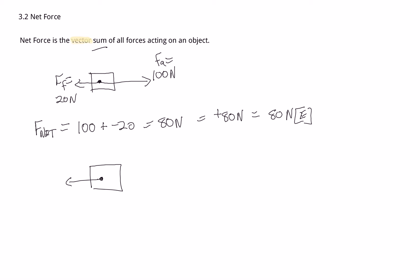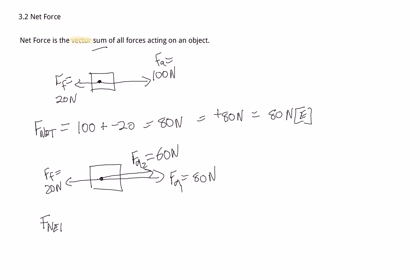Let's add to this question. Suppose we've got 20 newtons of friction again, one person applying 80 newtons forward, and another person applying 60 newtons forward — we'll call them applied one and applied two. Our net force is 60 plus 80 plus negative 20: that gives us 140 minus 20, which is 120 newtons to the right. Pretty basic when acting in linear fashion, whether up and down or sideways.